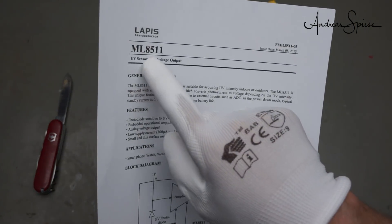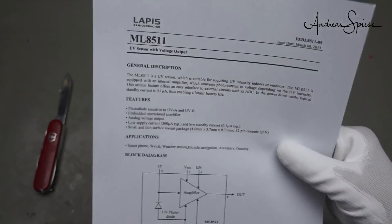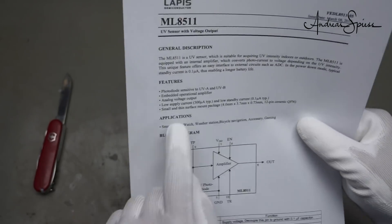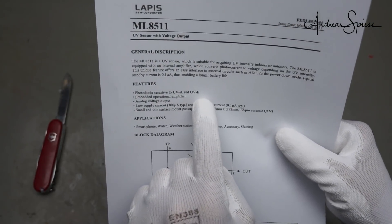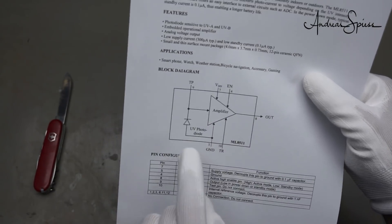This chip contains a ML8511 UV sensor with voltage output. It measures ultraviolet A and ultraviolet B rays and provides an analog output.